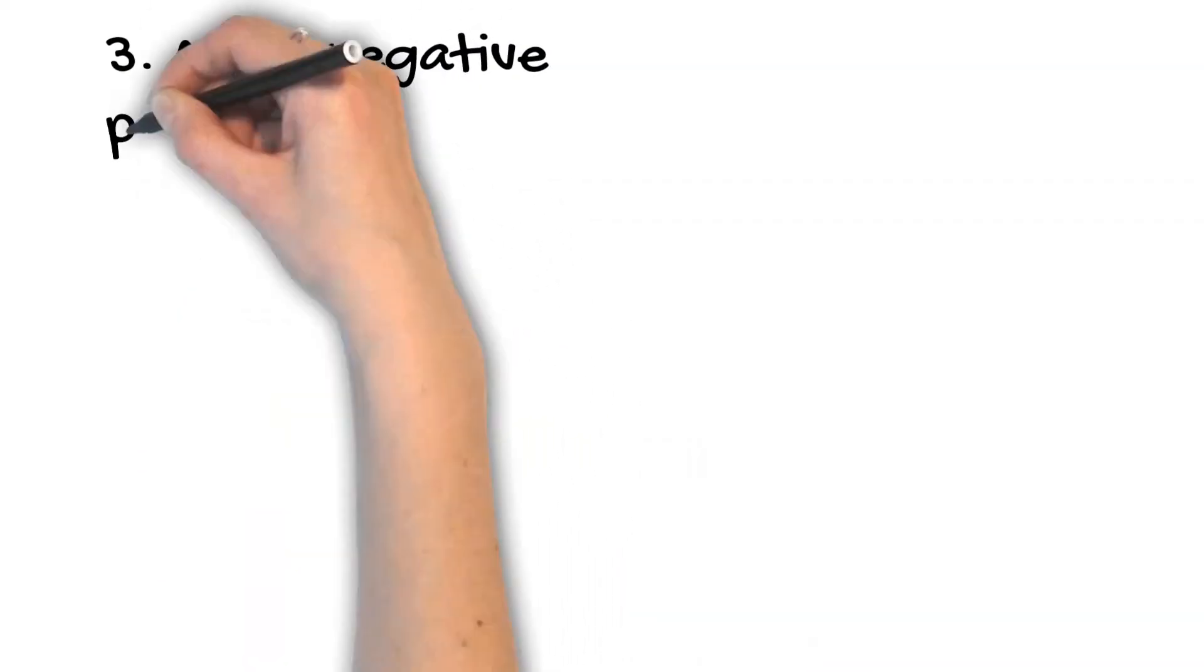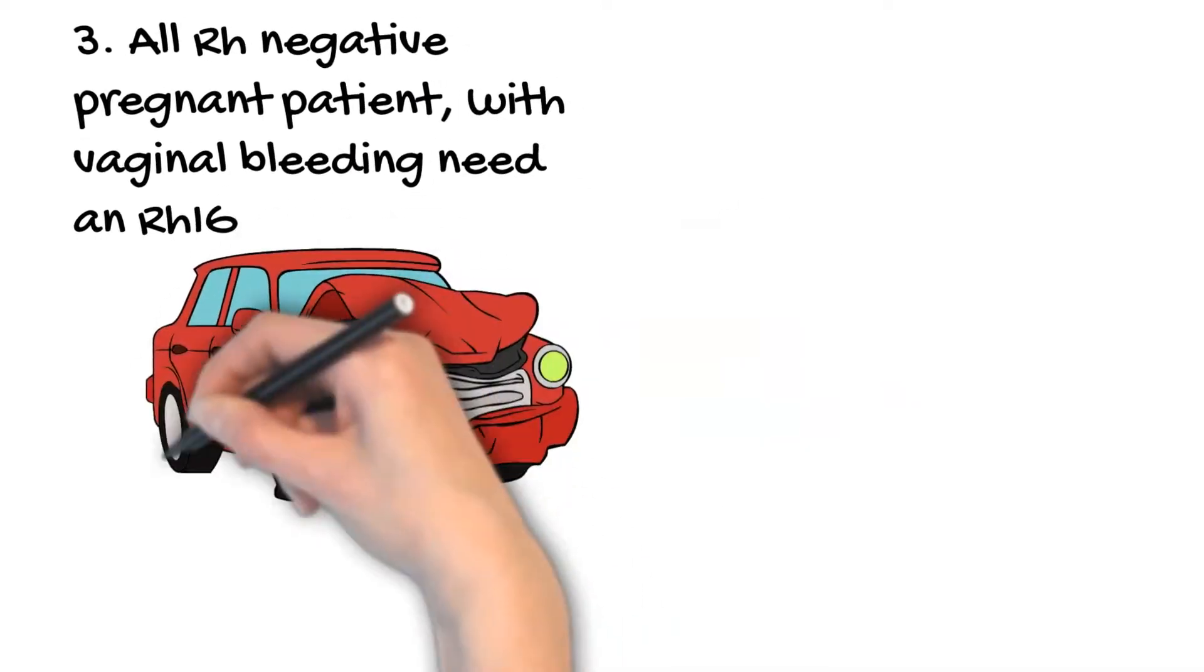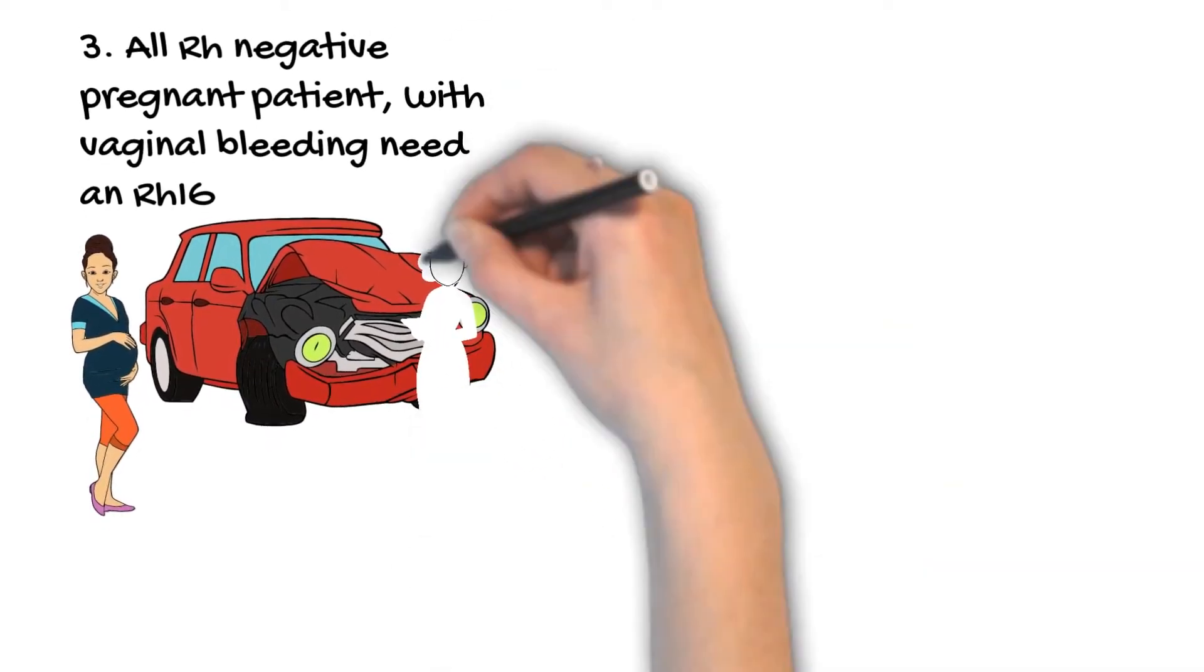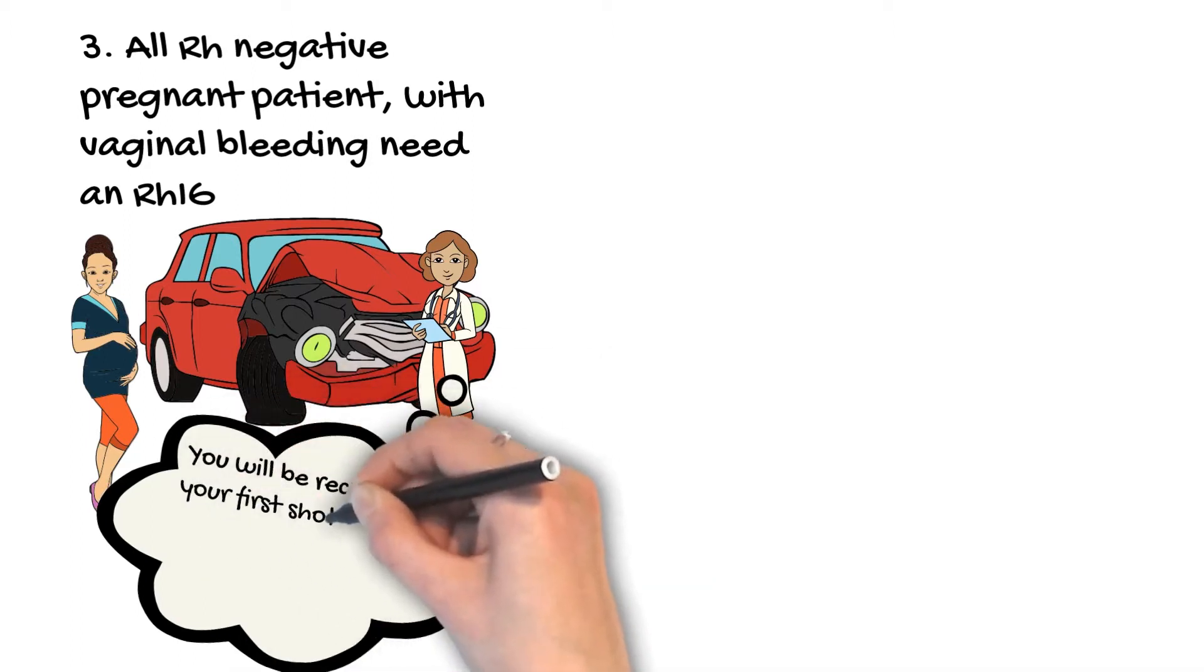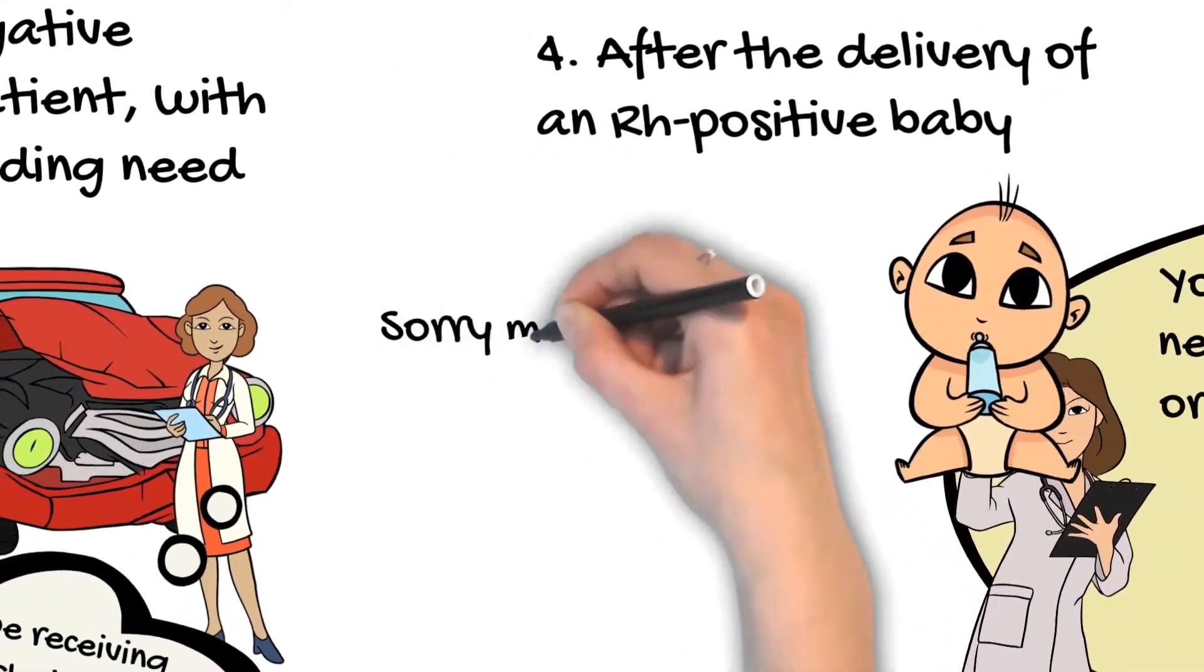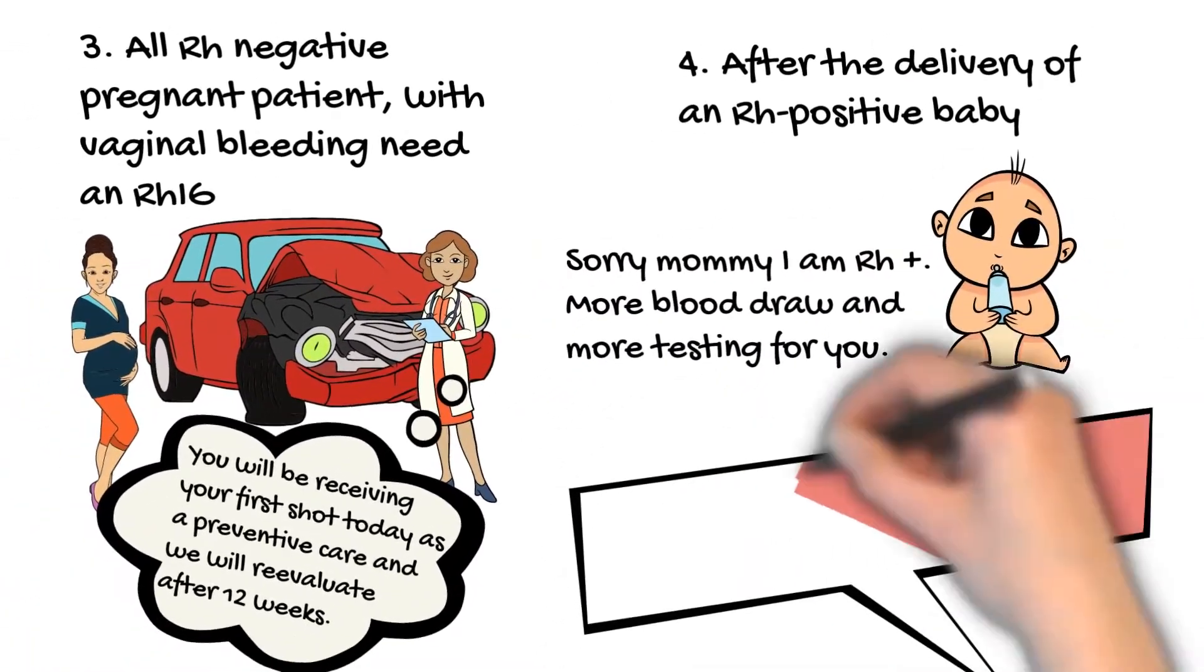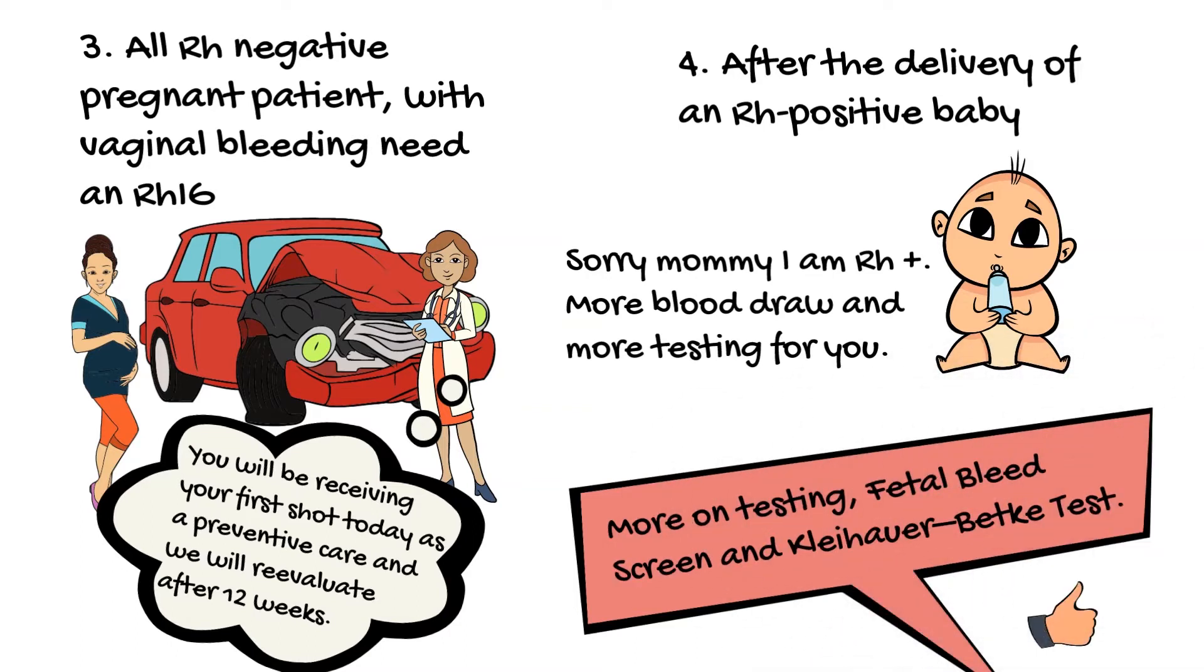A pregnant patient with RH negative may be a candidate for RHIG even before 28 weeks of gestation if the patient has vaginal bleeding due to trauma to abdominal area. A patient would be a candidate for a booster shot of RHIG if the initial dose was more than 12 weeks prior to due date. The patient should receive another dose of RHIG if her baby is RH positive. A test must be performed to determine the amount of RHIG the patient would need.